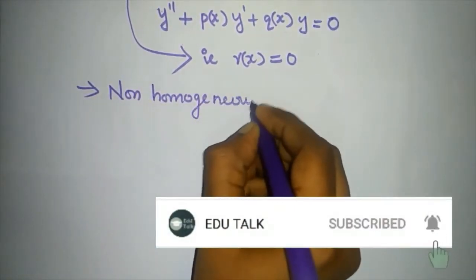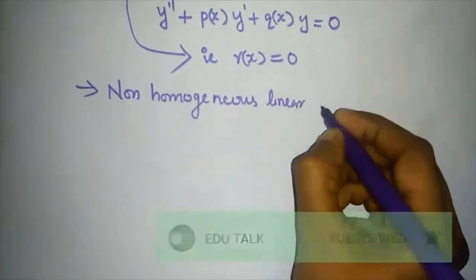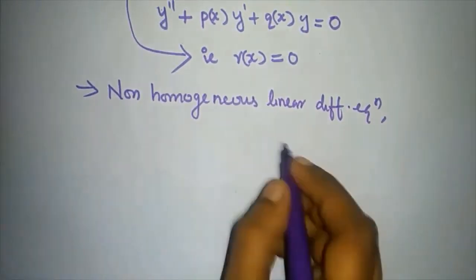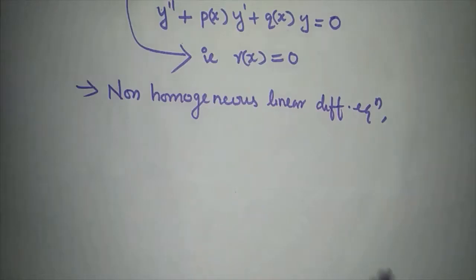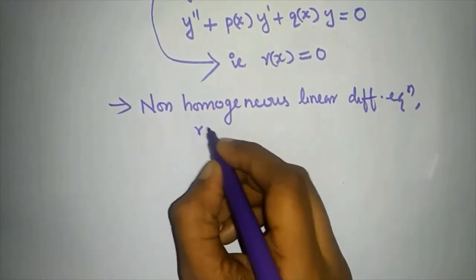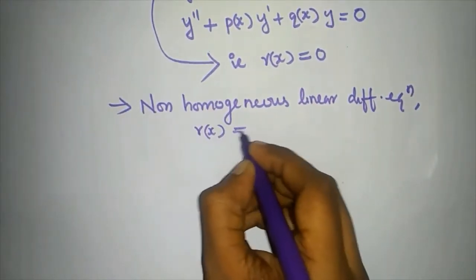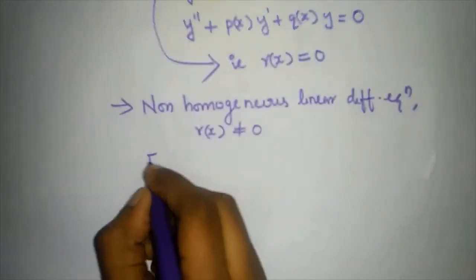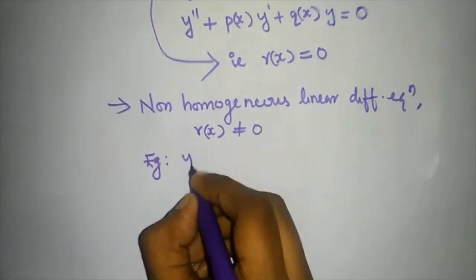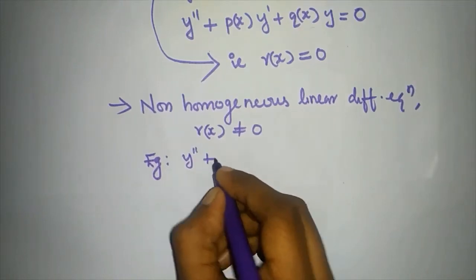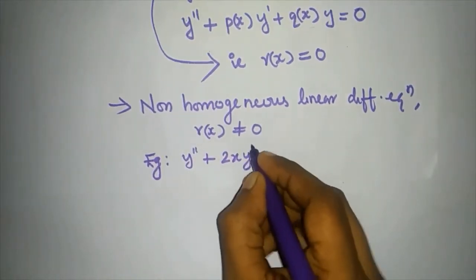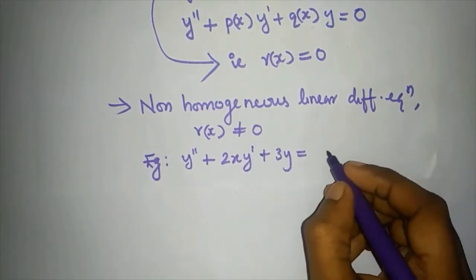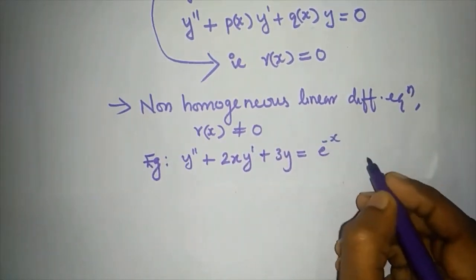Non-homogeneous means R(x) is not equal to zero. For example, y'' plus 2x·y' plus 3y equals e^(−x) — here R(x) = e^(−x) ≠ 0, so this equation is non-homogeneous.